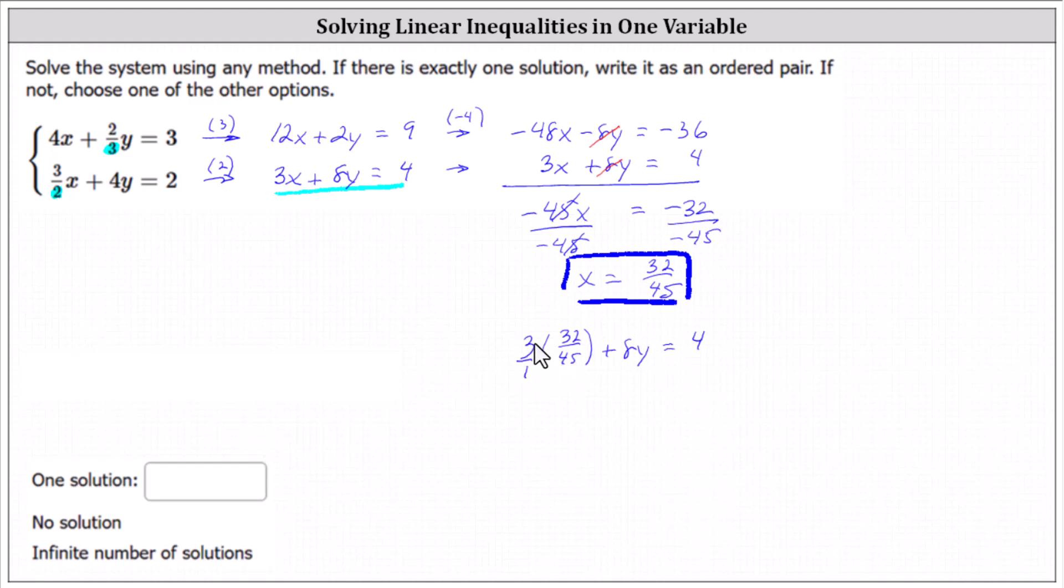Notice 3 and 45 share a common factor of 3. There is one 3 in 3 and 15 threes in 45, which gives us 32/15 plus 8y equals 4.